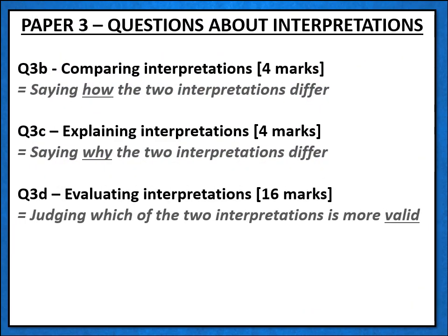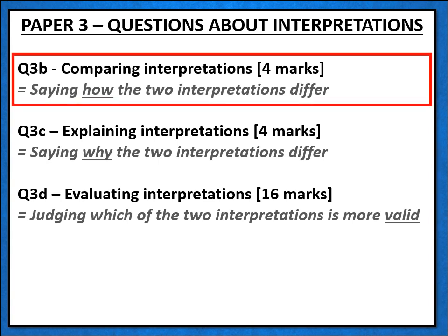On paper 3, as you probably know, you are going to get three questions about interpretations. They are questions 3b, 3c and 3d. Today we are just going to look at question 3b, which is where you will be required to compare interpretations — i.e. you're going to be saying how the two interpretations are different.